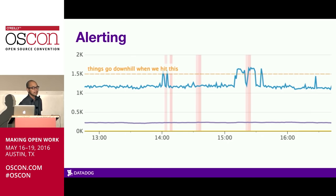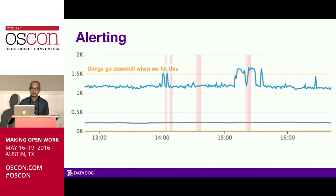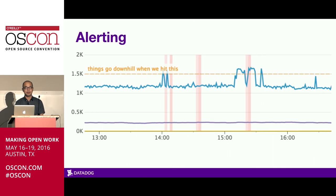The most common types of alerts are threshold alerts — a metric goes above some threshold a certain amount of time and an alert fires. For some metrics such as disk space, this is obvious: set it at something like 80%, and when it hits that threshold, you'll have enough time to clear out disk space before the machine crashes. For other metrics, you might understand their behavior from past experience — if this metric goes to 1.5K, things go bad, so you set the threshold there.